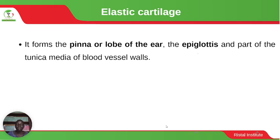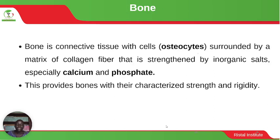Elastic cartilage forms the pinna or lobe of the ear, the epiglottis and part of the tunica media of blood vessel walls. The tunica media is the middle layer of blood vessels. This elastic cartilage ensures that the blood vessel can stretch and recoil without any problem.